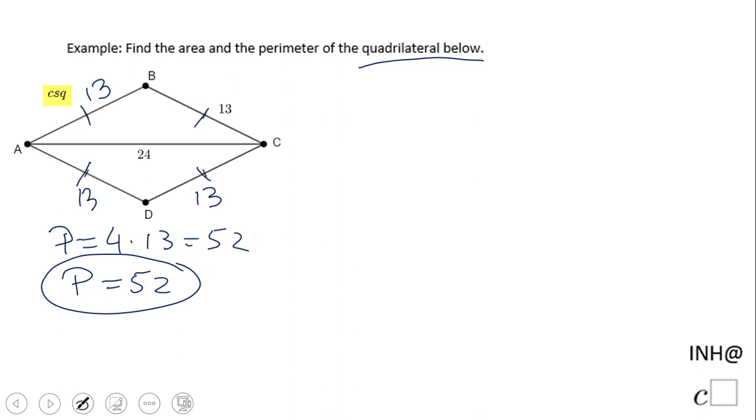But what about the area? For the area we have a couple choices, but the easiest one, in fact the only one in this case, would be to use this formula which says the area of a rhombus equals half the product of the diagonals.